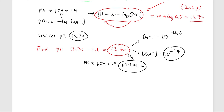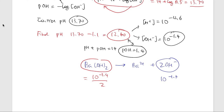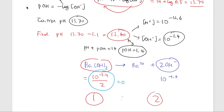Now we need to convert the OH⁻ concentration back to the concentration of the base. The base dissociates into Ba²⁺ and 2 OH⁻. So if the OH⁻ concentration is 10⁻¹·⁴, the base concentration equals 10⁻¹·⁴ divided by 2, because of the 1-to-2 stoichiometry ratio. That gives us 0.02 molar. The initial concentration was 0.25 molar, so now we have both concentrations.